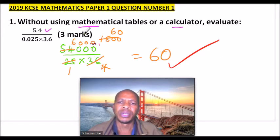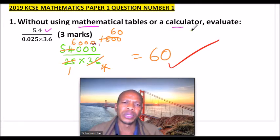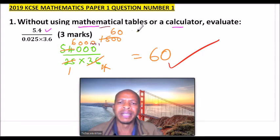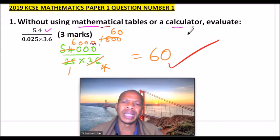Now this question, we are told without using mathematical tables or a calculator, evaluate: 5.4 divided by 0.025 multiplied by 3.6. You get three marks. Now here you have already been given instructions you don't use mathematical tables or calculator, and if you use them you don't get any mark.